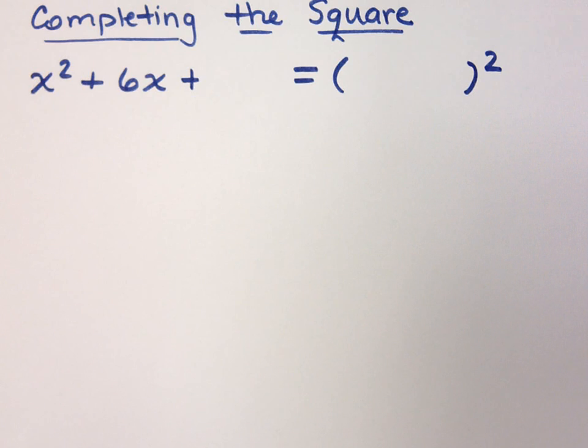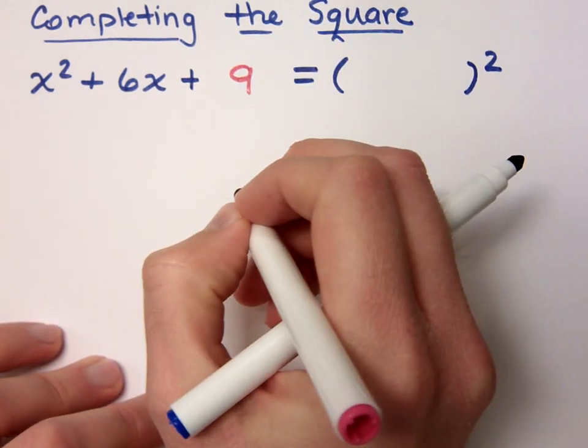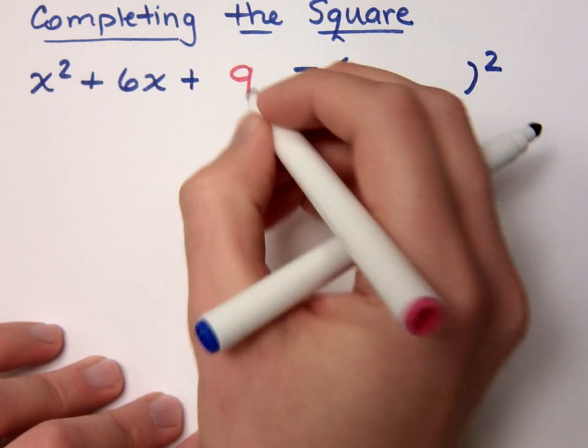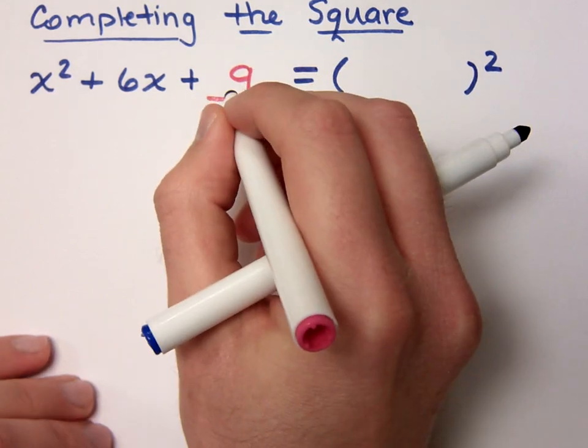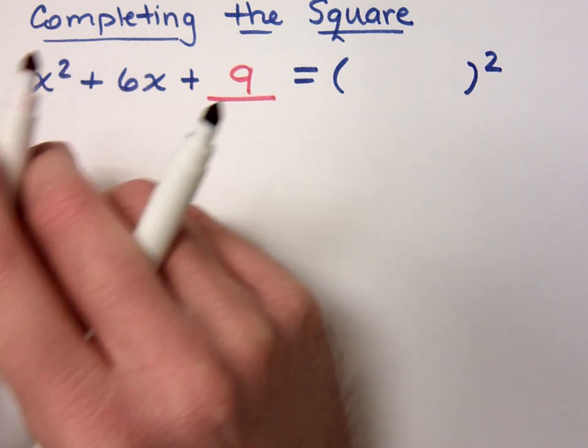And the way that I can do that is by putting in this number right here. 9 is a square, but he relates to 6, right? What's the relationship? What number do they have in common? 3.